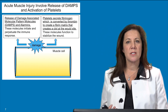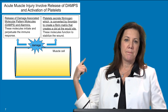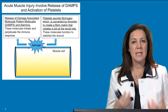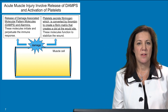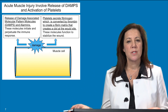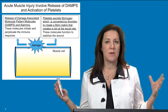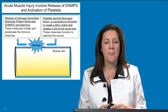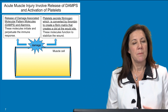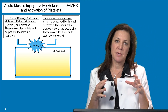In the earliest stages of muscle injury — represented by the muscle cell and the blue star indicating damage — there is release of DAMPs, damage-associated molecular patterns, and substances called alarmins. These trigger and signal to the immune system that there is a problem in the tissue. Additionally, platelets secrete fibrinogen, which is converted by thrombin to fibrin to form a clot and stabilize the area.